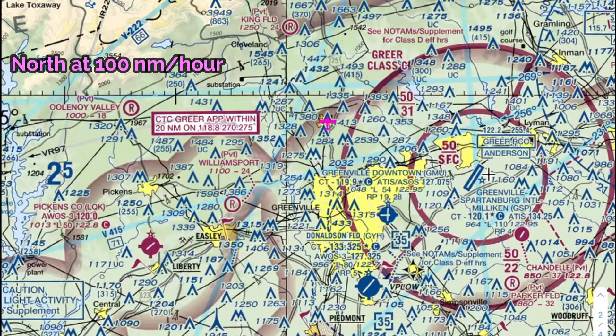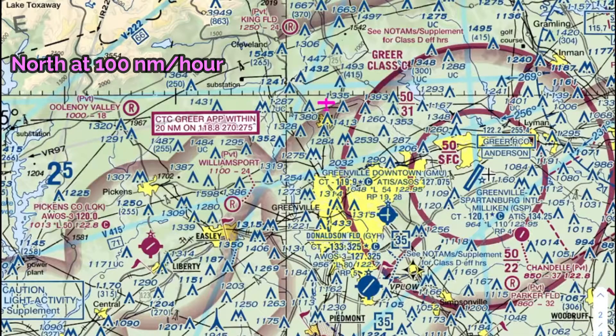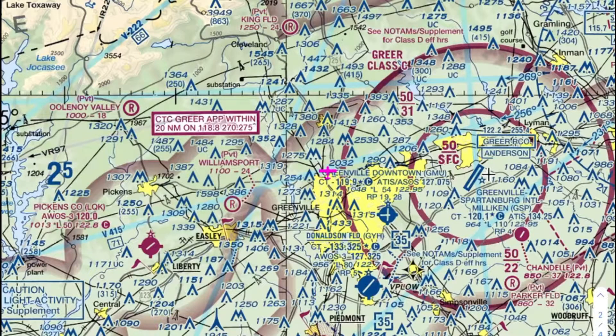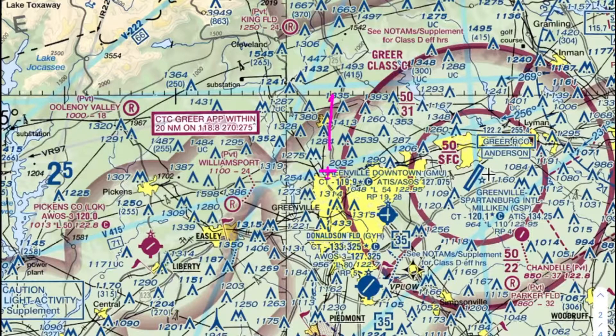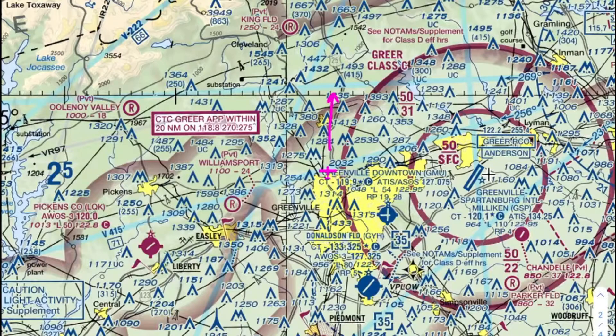Instead of saying or writing north at 100 knots, I could simply draw a vector on a map to represent this same information. To do this, I draw an arrow starting at the aircraft's current position, then pointing north. The longer the arrow, the bigger the value, in this case speed. So a vector is simply an arrow which represents direction and how much of some value it possesses.